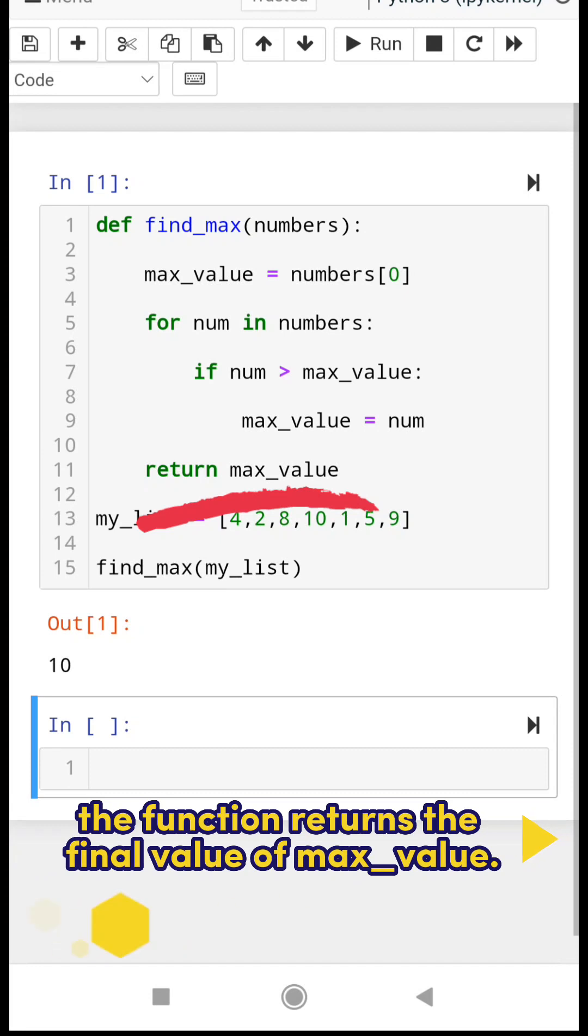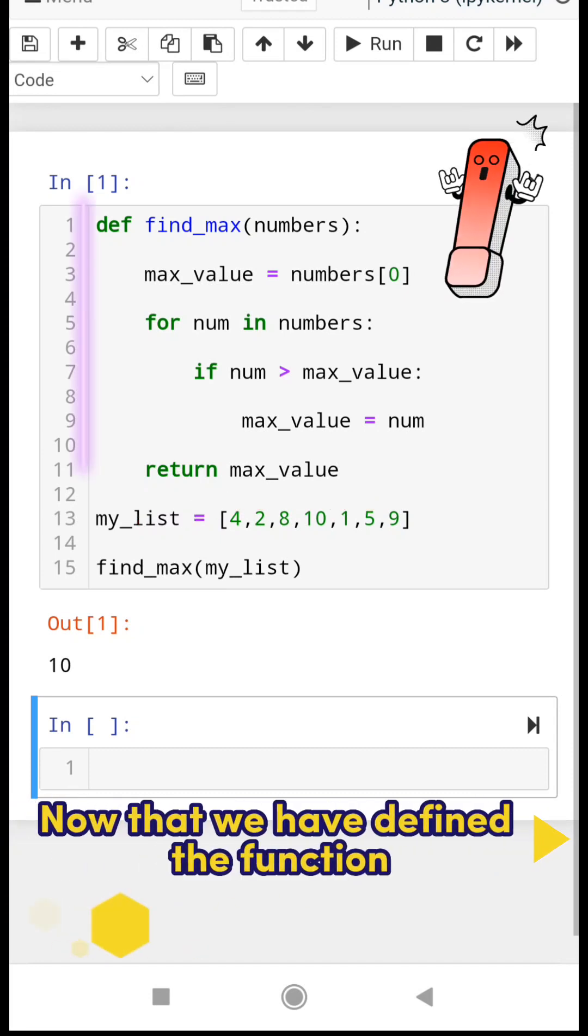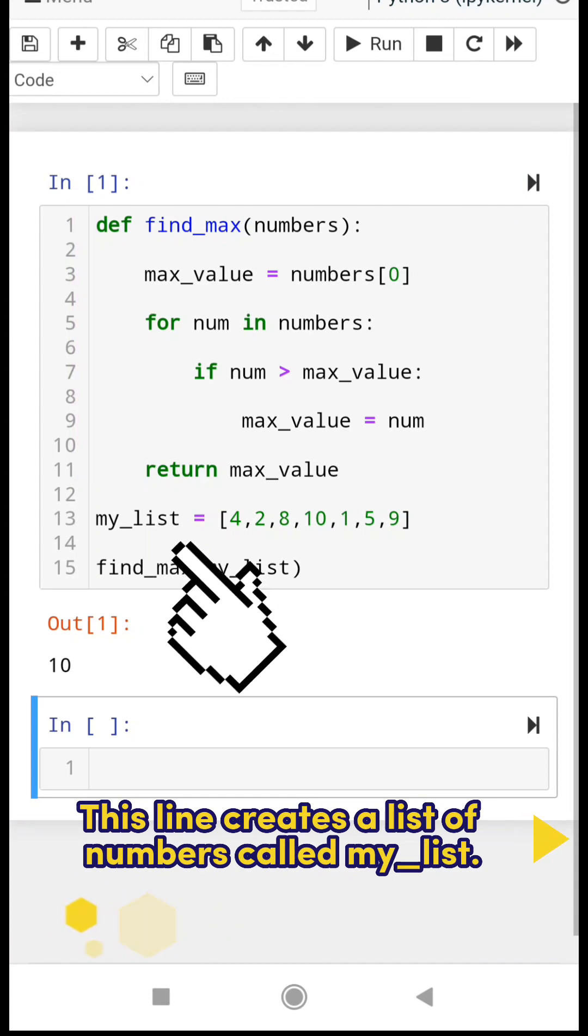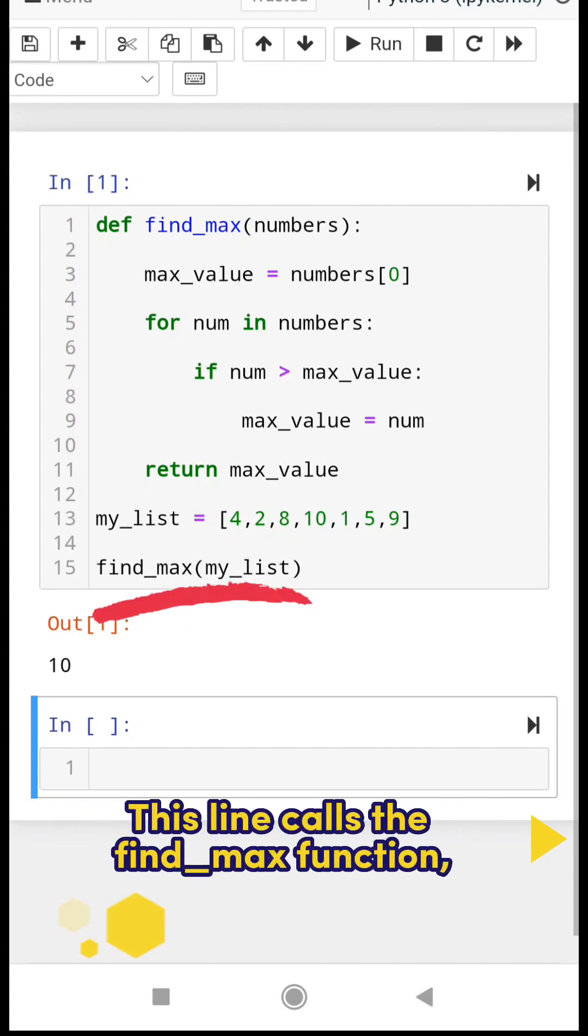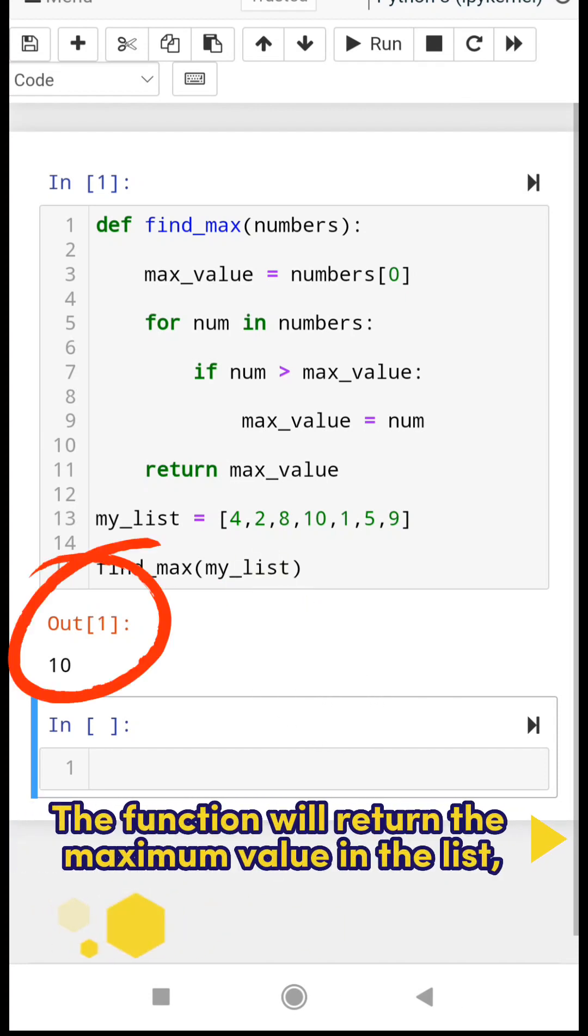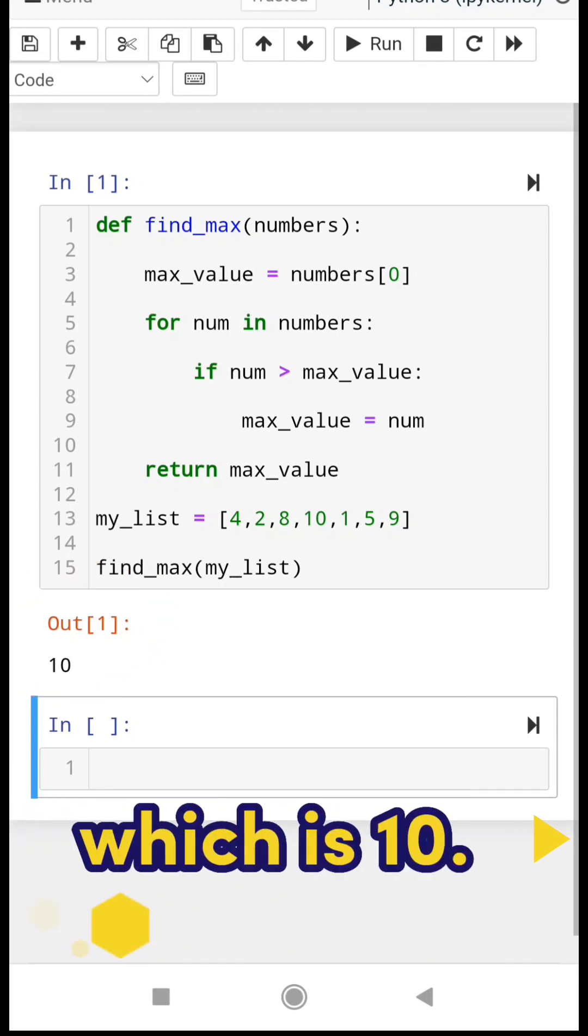Now that we have defined the function, this line creates a list of numbers called my_list. This line calls the find_max function passing in my_list as an argument. The function will return the maximum value in the list, which is 10.